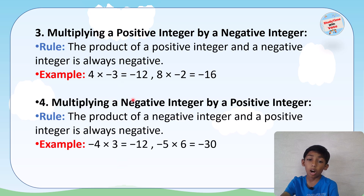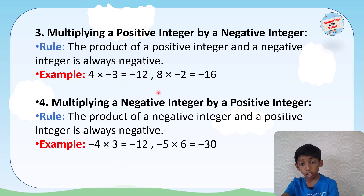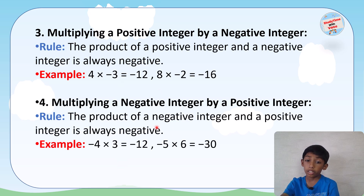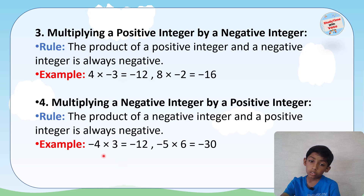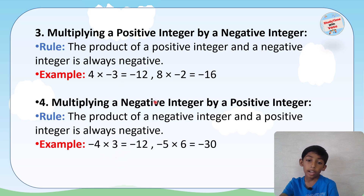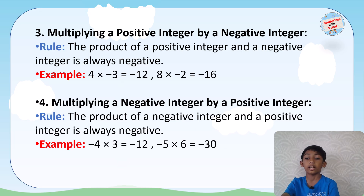Then there is the fourth rule: multiplying a negative integer by a positive integer. The product of a negative integer and a positive integer is always negative. For example, (−4) × 3 equals −12, and (−5) × 6 equals −30.